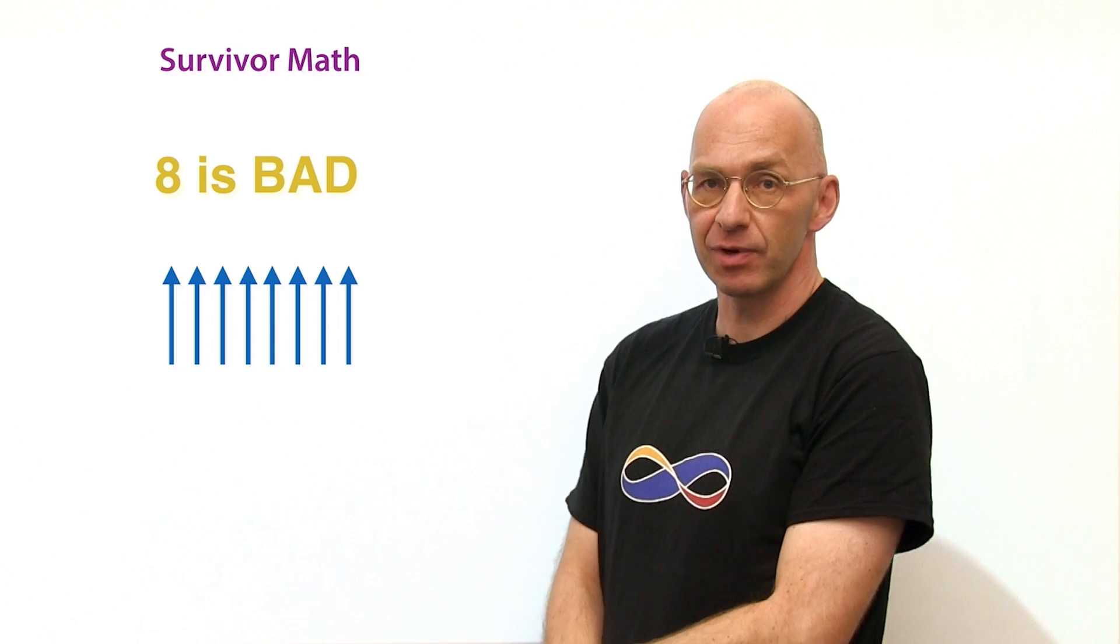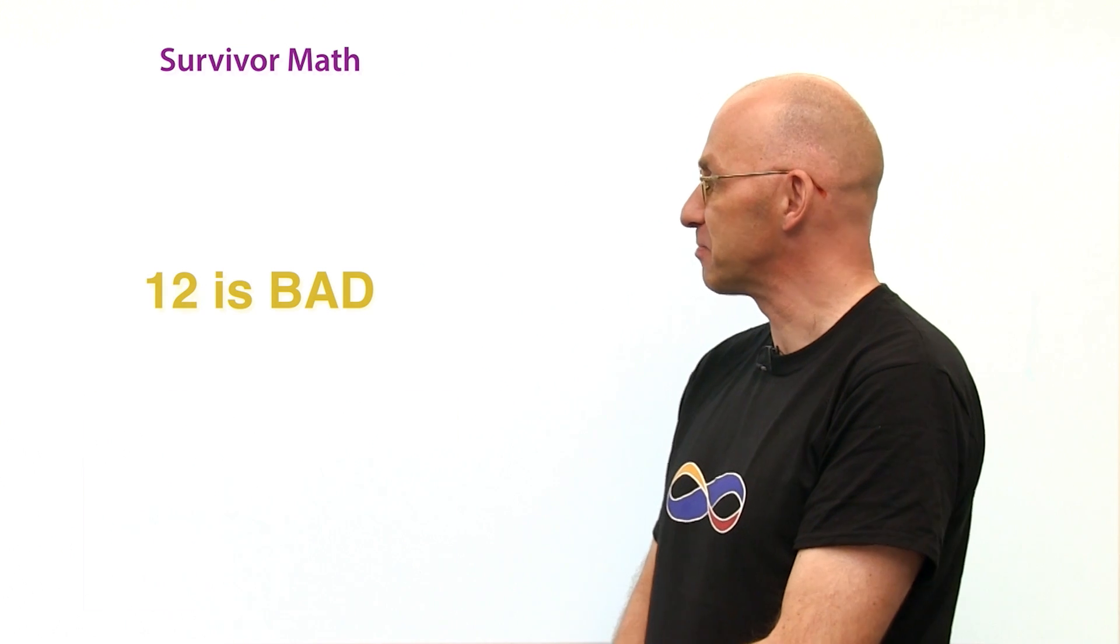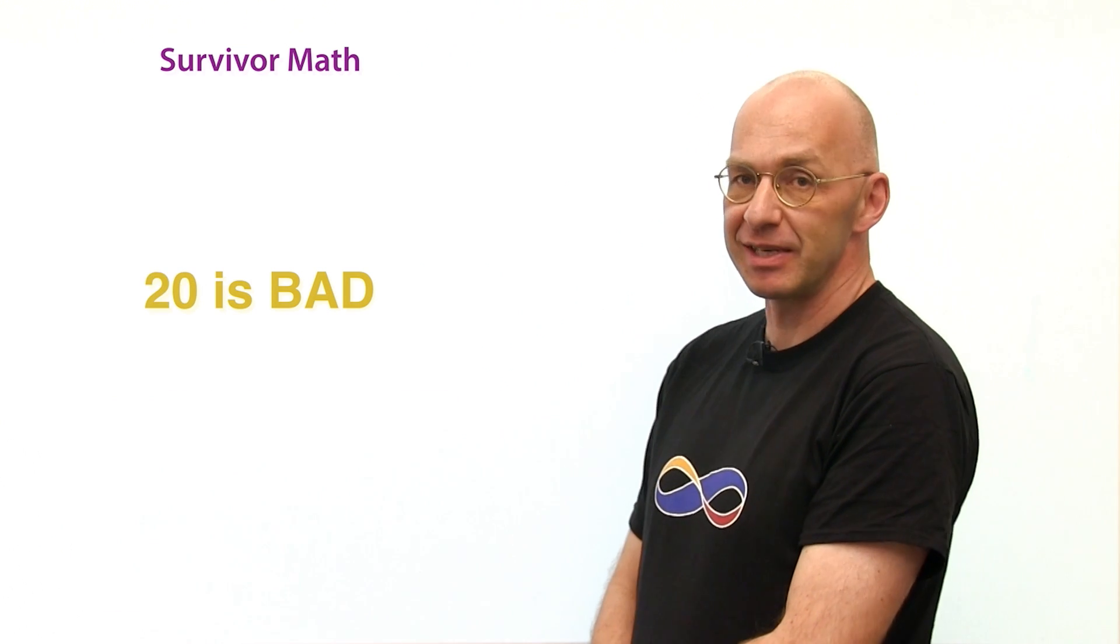Eight is bad. Four is bad. Eight is bad. And now you probably can guess what else is bad? All multiples of fours are bad. So 12 is bad, 16 is bad, and 20 is bad too. And we're getting pretty close to 21.